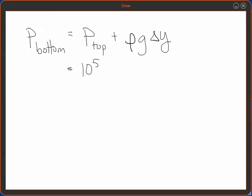Sorry, not kilopascals, pascals. Plus, let's see, rho is 1000 kilograms per meter cubed, G is 10 meters per second squared, delta Y.